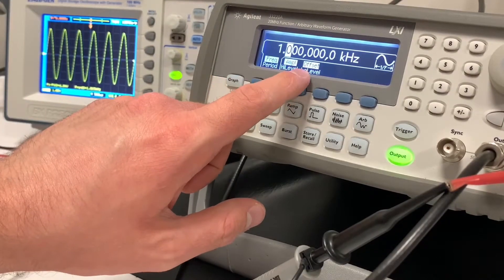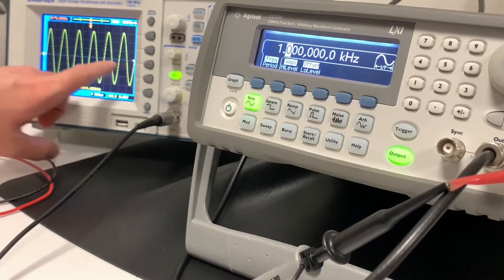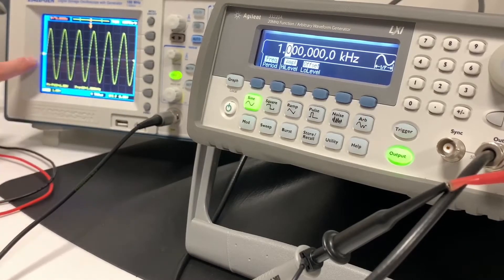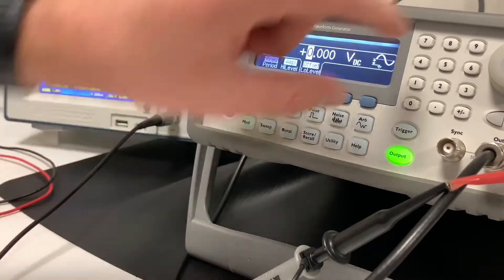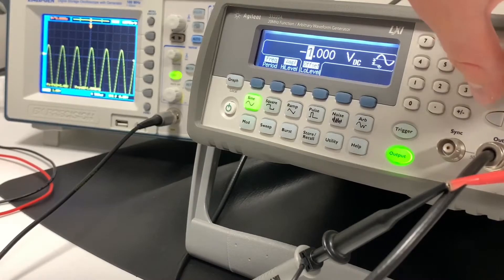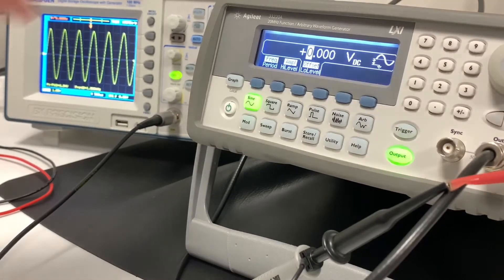And the third option here for offset will give a DC offset to this graph. So right now it's got a zero DC offset, so it's just going to be a pretty much pure AC signal. But if I click on offset and then turn the knob or type in a number, you'll see the graph move up and down on the oscilloscope as I introduce a DC component to our AC signal.